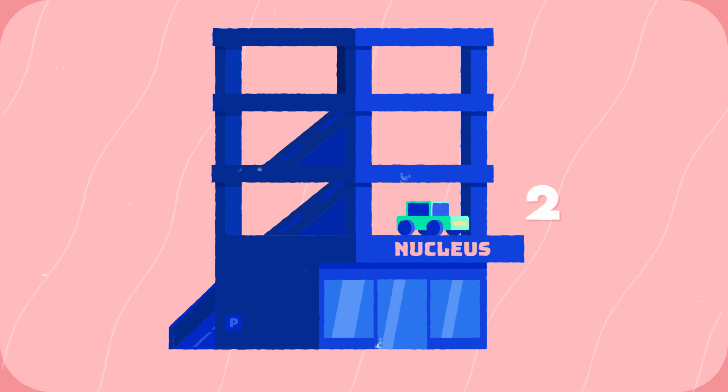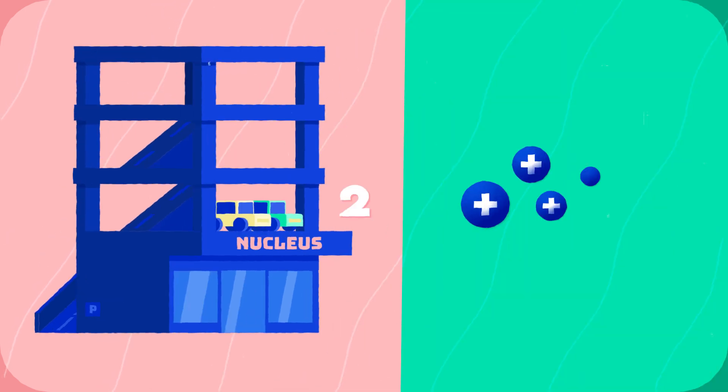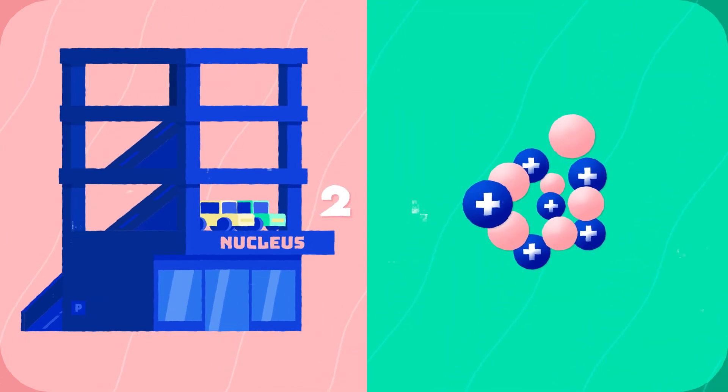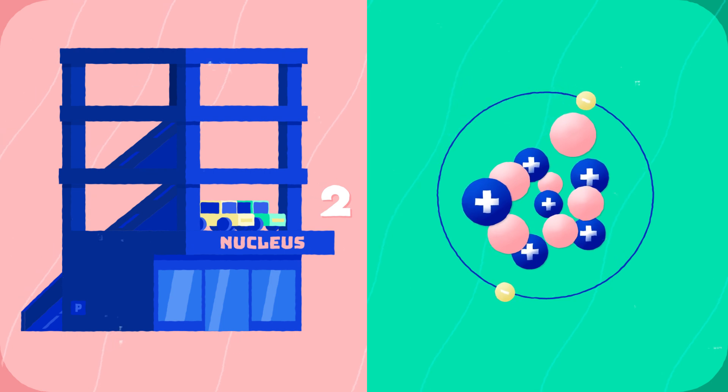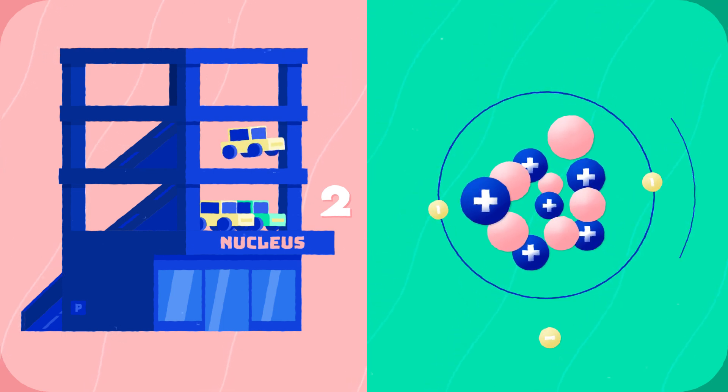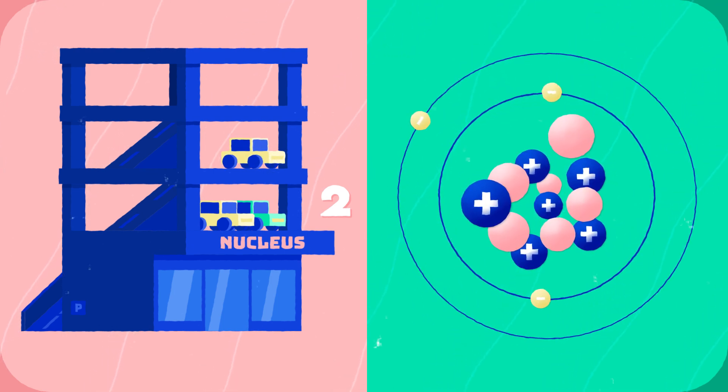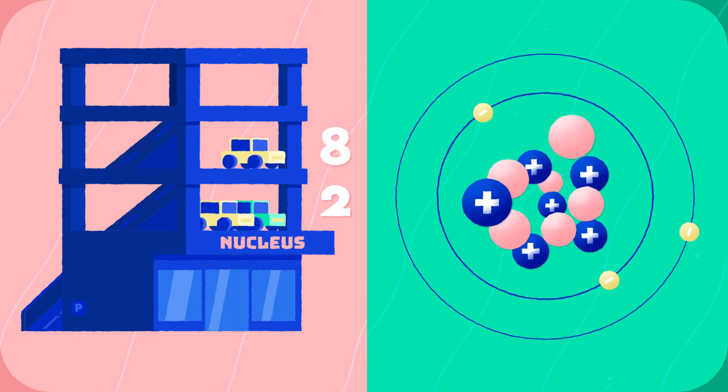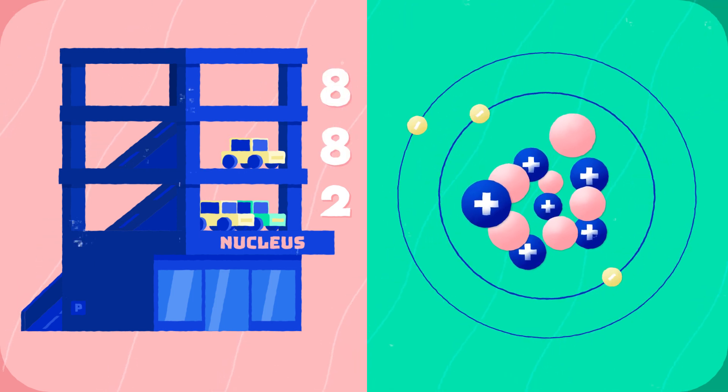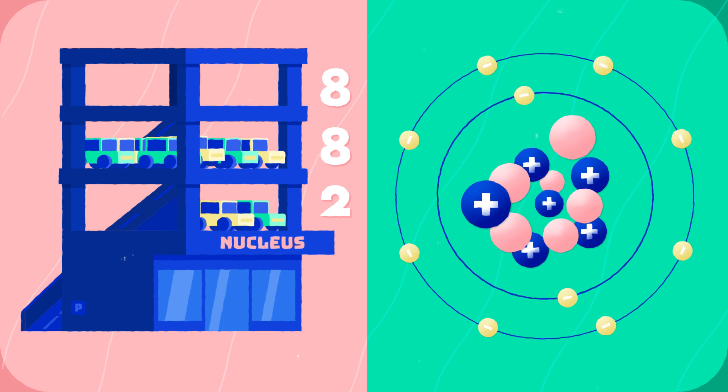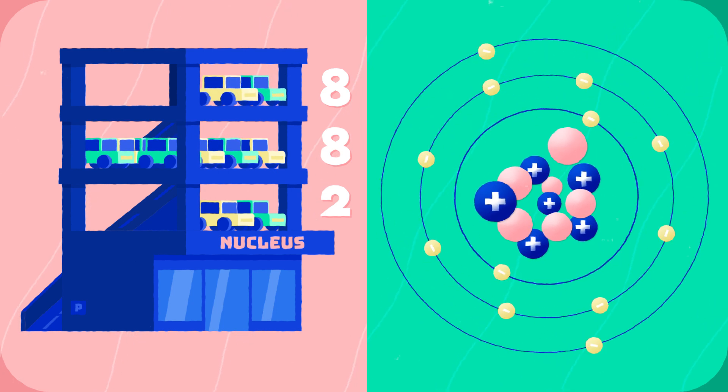However, there are only two spaces on the first level. So as soon as they are full, cars will have to park on the second level. This is true for electrons as well. As soon as there are two electrons in the first shell, any further electrons will have to go into the second shell. There are a maximum of eight spaces on the second and third shell, and as soon as these are full, electrons will have to start filling up the next shell.